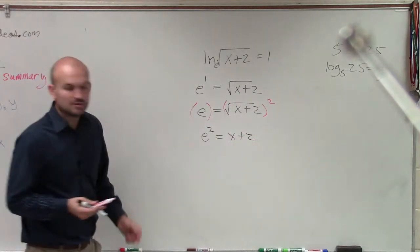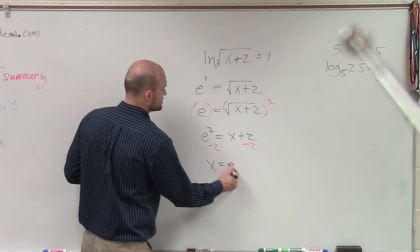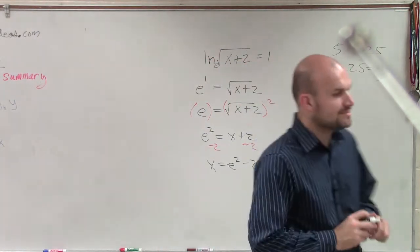So now, to undo the adding 2, I subtract 2. So therefore, x equals e squared minus 2. So to evaluate or approximate this,